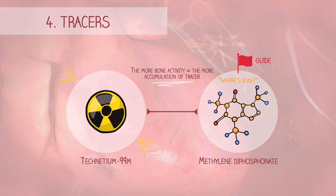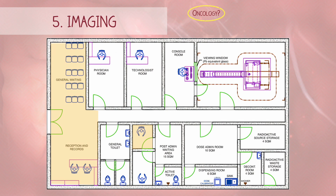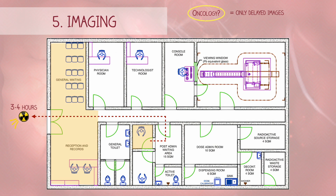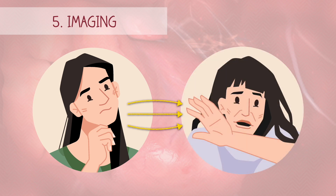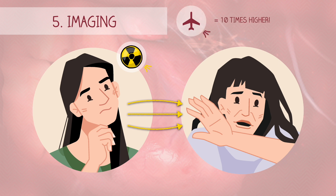If a bone scan is done to evaluate whether cancer has spread to the bone, once the patient is injected, they can leave the facility and come back to take images after a three- to four-hour delay. This ensures that the tracer has had enough time to accumulate in the bones. The tracer only emits a tiny bit of radiation and is not dangerous to other people. It's essential to recognize that the radiation involved is significantly lower than what people typically encounter in everyday situations — for instance, the radiation exposure during a transatlantic flight is about ten times higher than that of a bone scan.